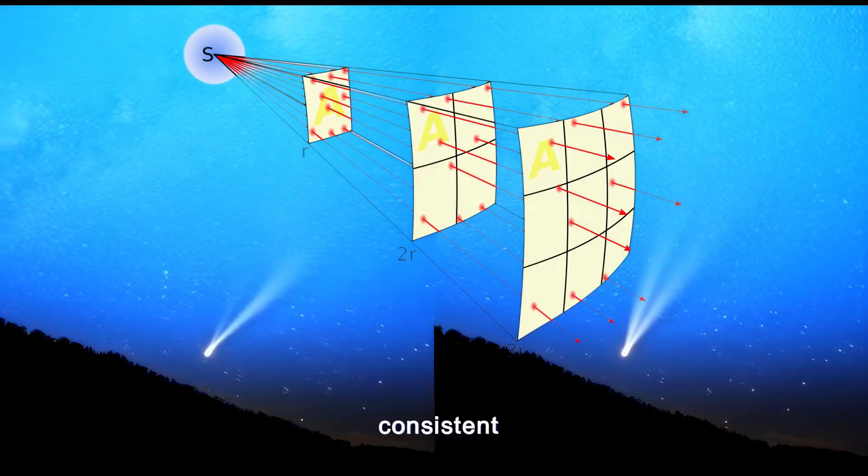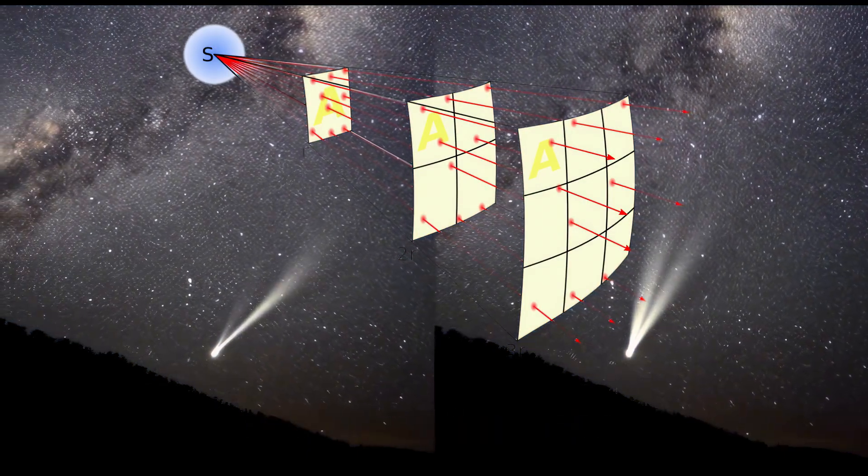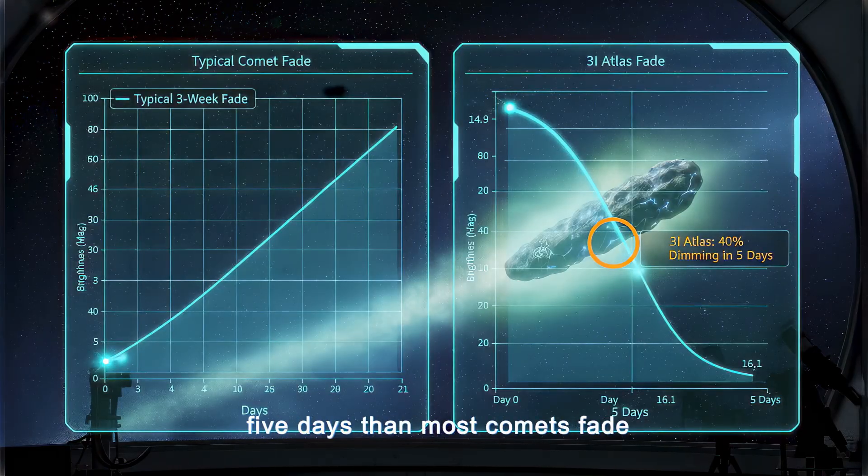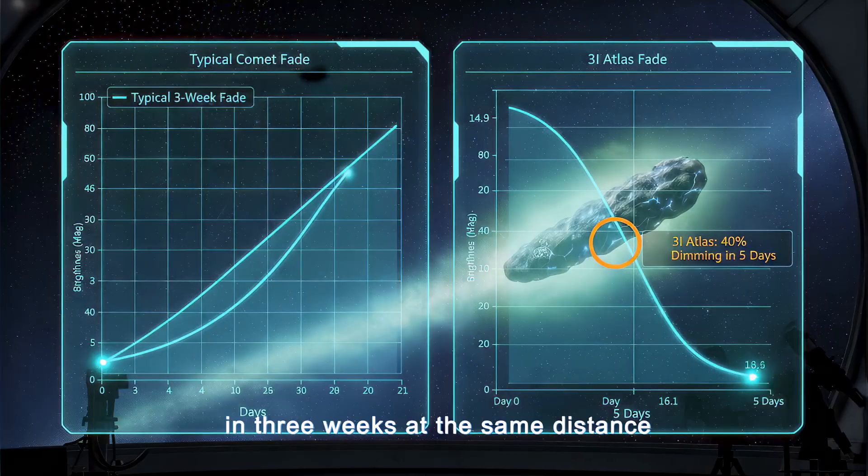The fade is slow, consistent, and mainly controlled by declining solar energy. But 3i Atlas has faded more in five days than most comets fade in three weeks at the same distance range.